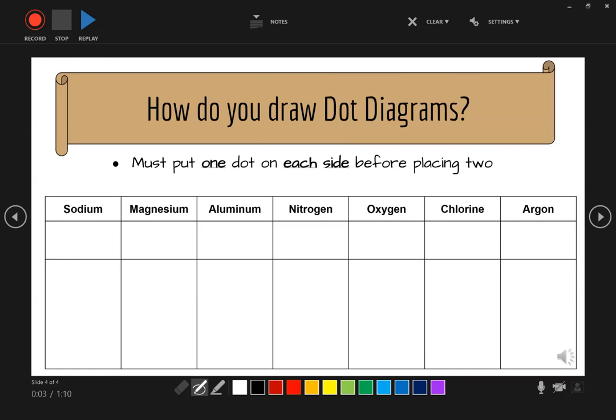How do you draw dot diagrams? The one rule you have to remember is you have to put one dot on each side before placing two on any side.